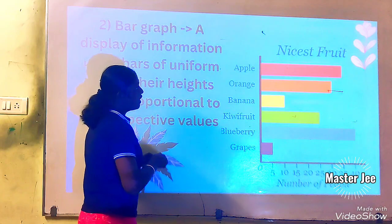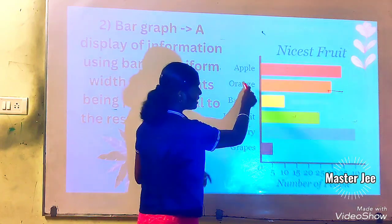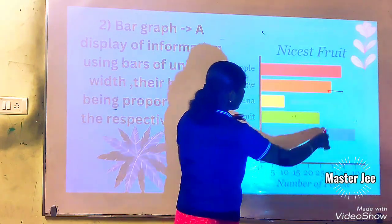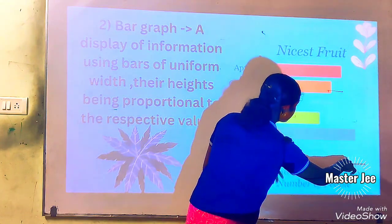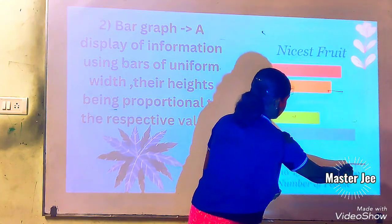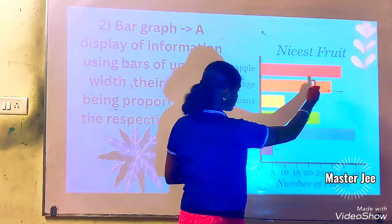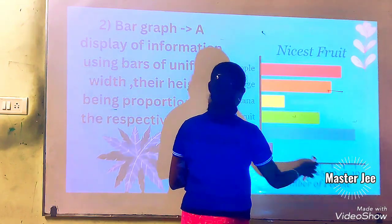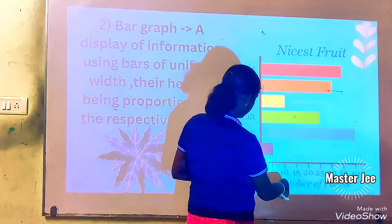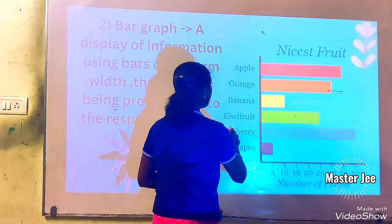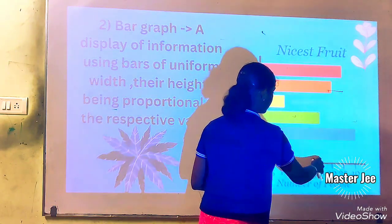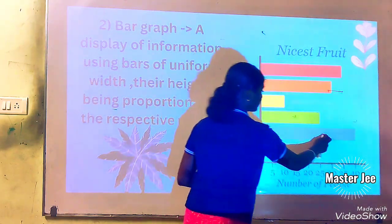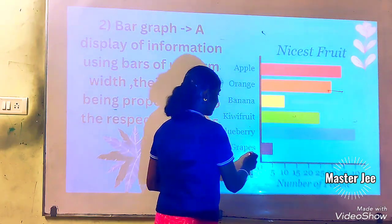Here's an example. Apple is the most liked fruit. Apple's value is between 32 and 35. Orange is between 25 and 30. Banana is between 10 and 16. Kiwi fruit is between 25 and 30. Blueberry is 40. And grapes is 5.